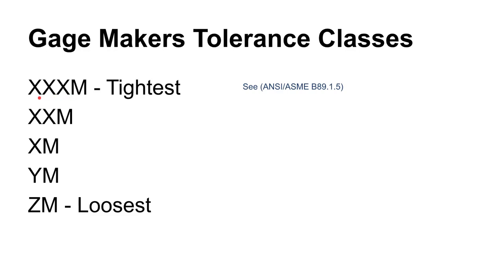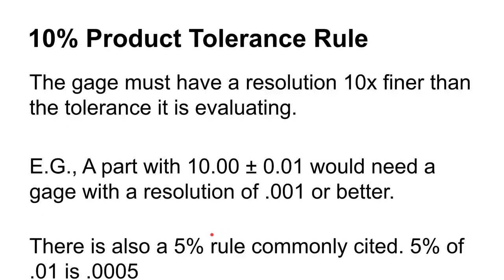In the B89 1.5 series, XXM is the tightest tolerance class. Gauge maker tolerances are pretty tight. You may be used to working in thousandths, where two or three thousandths is a fairly tight tolerance for a product. But when you start looking at gauges to evaluate whether those products are in tolerance, you have to level up — you start dealing very commonly in ten-thousandths and beyond, requiring different evaluation techniques like optical flats and LVDT probes.